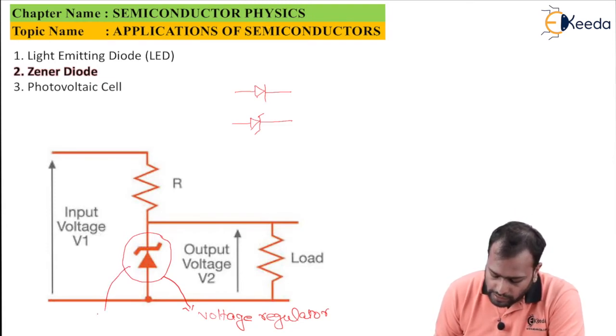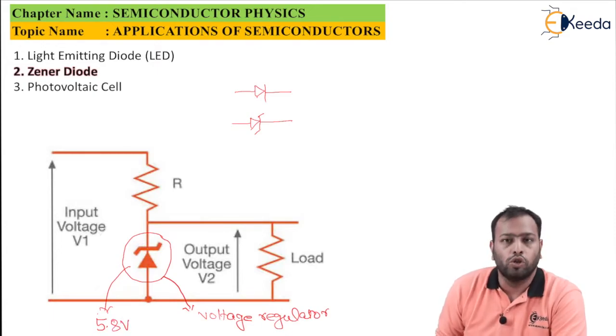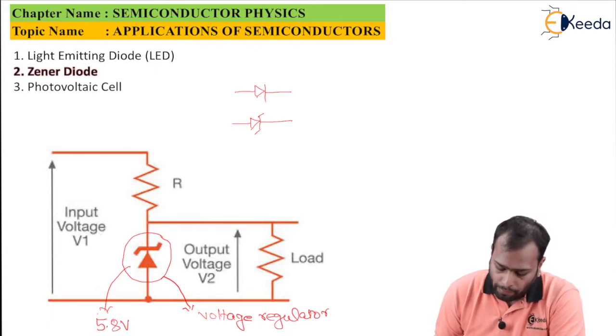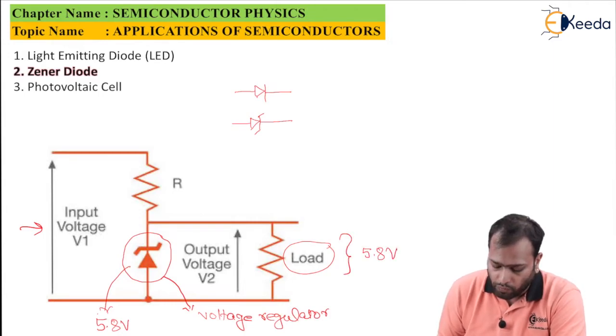Let's say suppose this zener diode comes with a value of 5.8 volts. So what will happen? Any input voltage you give on this side, this load will always be across the 5.8 volts. Of course this input voltage has to be greater than 5.8 volts for this circuit to be active.